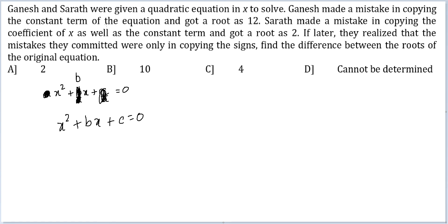Now we have Ganesh made a mistake in copying the constant term. So he wrote down x squared plus bx minus c. This is what Ganesh did.